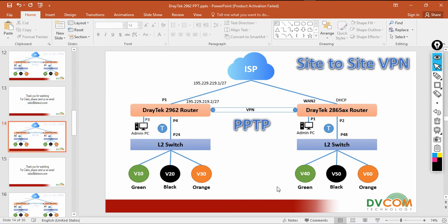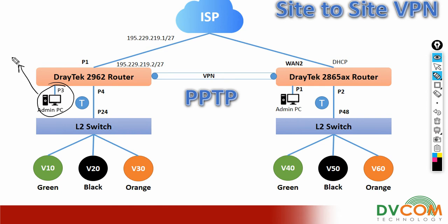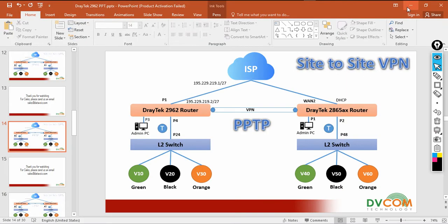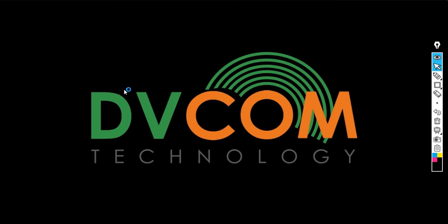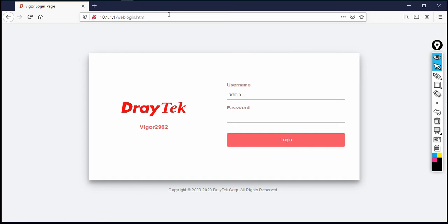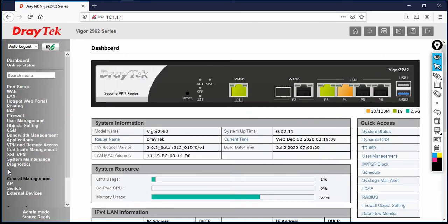I am going to access my HQ DrayTek router through the management IP, which is 10.1.1.1. My PC is directly connected on port number 3, and we configured 10.1.1.1 /24. We have also enabled DHCP and DNS. The default username is admin and the password is admin. Click Login, then click OK.